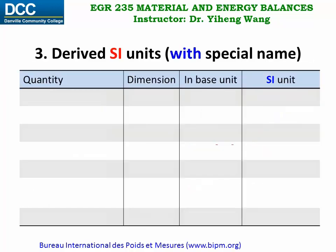This next table is similar to the previous one — again we're filling it with units derived from the SI base units — but the major difference is that the derived units here all have their own names. For example, for the quantity planar angle, which is defined as the ratio of the arc length over the radius, its dimension is length over length, which equals one, meaning the angle is dimensionless. Its SI unit expressed in base units is meter per meter, essentially dimensionless, and this has its own name: radian.